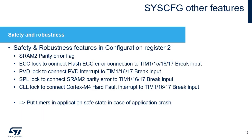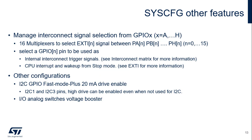The system configuration register 2 contains the control and status bits linked to safety and robustness, such as the SRAM2 parity error flag, and control bits to steer some error detection events to the timer's break inputs. This allows timer outputs to be placed in a known state during an application crash. Once programmed, the connection is locked until the next system reset. These internal events include a flash error code correction event, a power voltage detector event, an SRAM2 parity error event, and the Cortex-M4 hard fault.